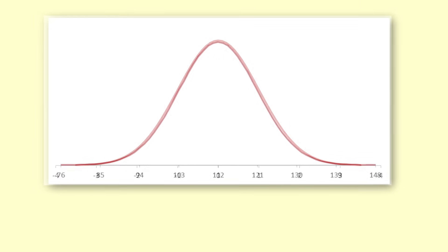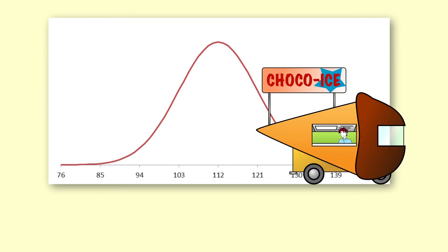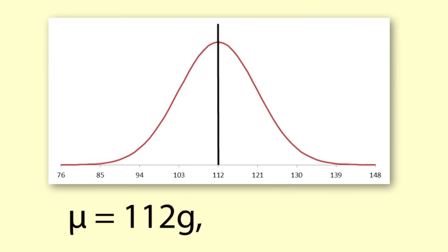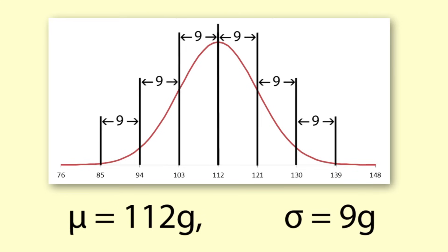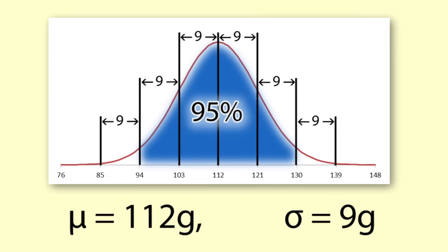Here is the PDF of a normal distribution approximating the weight of Luke's ice creams. There is a mean of 112 grams and a standard deviation of 9 grams. Straight off, we can say that 95% of all of Luke's ice creams will lie within two standard deviations of the mean. This is always true for normal distributions.